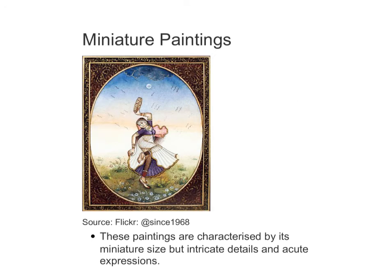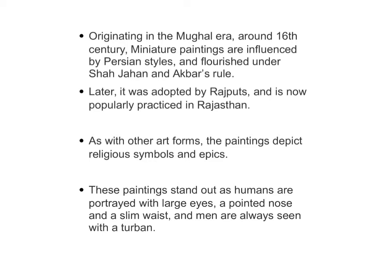The next painting is miniature painting, characterized by its miniature size. The size is small but there are intricate details, and everything has an acute expression as you can see in the image. It originated in the Mughal era around the 16th century, was influenced by Persian styles, and flourished under Shaja and Amber's rule. It was later adopted by Rajputs and is now popularly practiced in Rajasthan. This painting depicts religious symbols and epics. What makes it stand out is that humans are portrayed with large eyes, a pointed nose, a slim waist, and men are always shown with a turban.